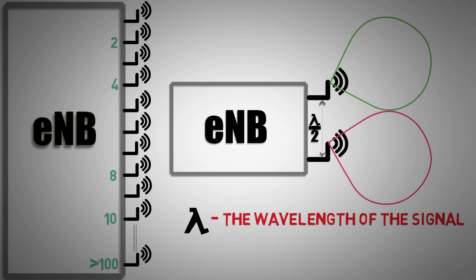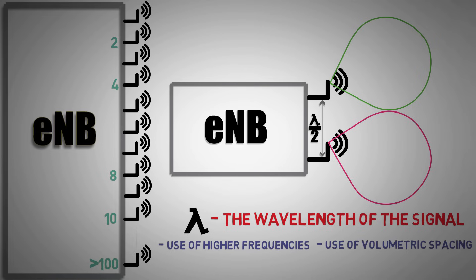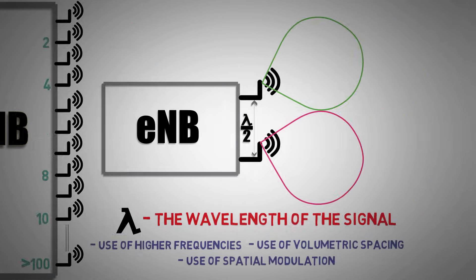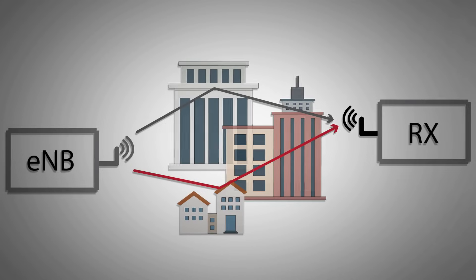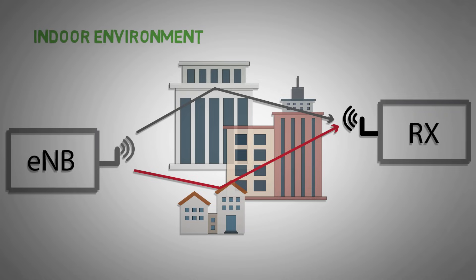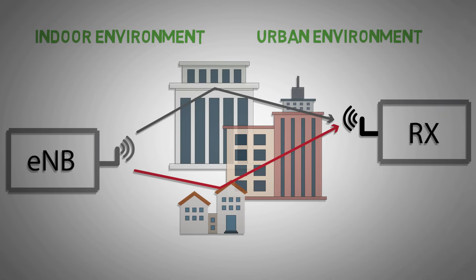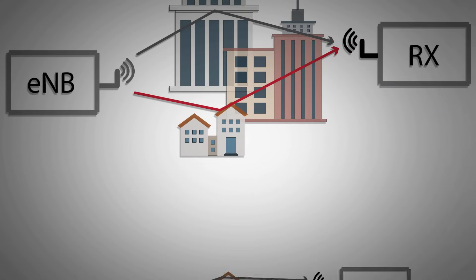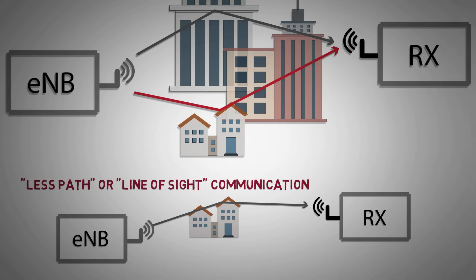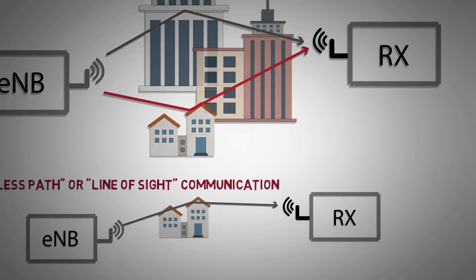In order to achieve this, various approaches can be taken, such as use of higher frequencies, use of volumetric spacing, and use of spatial modulation. One of the key requirements for a large MIMO system is rich diversity of signal paths between the transmitter and receiver. This is normally present within a typical indoor and most urban environments. Other environments where there are fewer paths won't be able to provide the same benefits with a MIMO or large MIMO system.